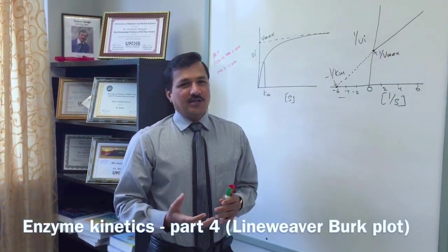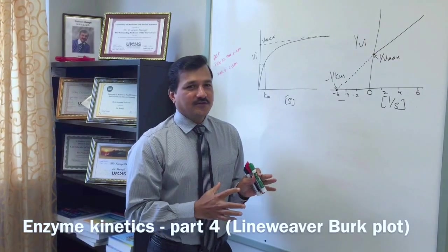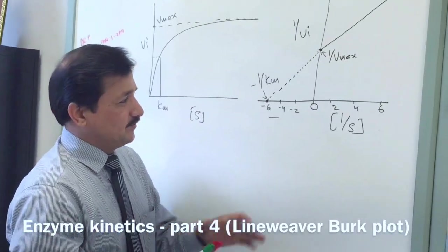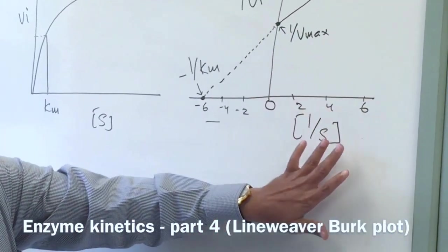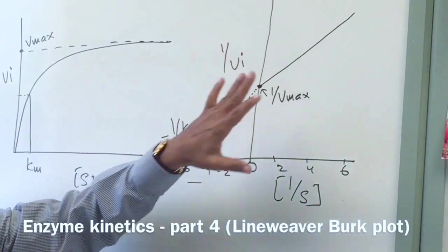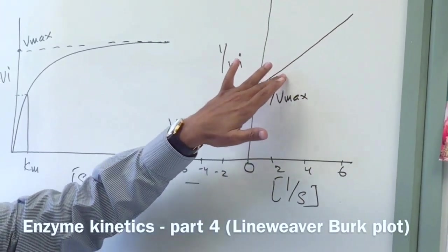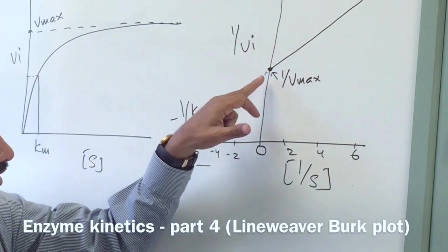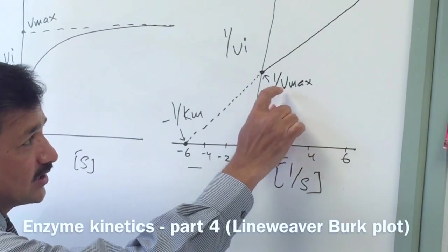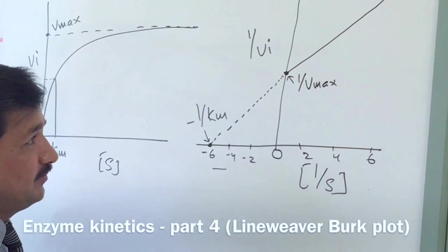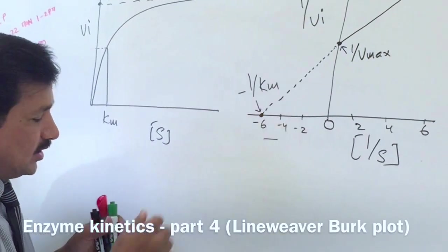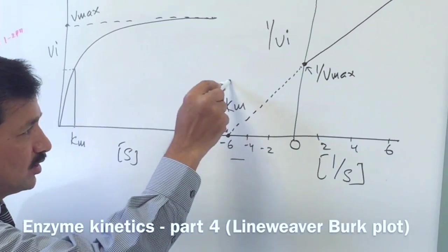Let me explain competitive and non-competitive inhibitors in relation to the Lineweaver-Burk plot. I have already drawn the Lineweaver-Burk plot here. The x-axis indicates 1 over substrate concentration, and the y-axis indicates 1 over initial velocity. Wherever the reaction velocity line touches the y-axis, that point is 1 over Vmax. If you elongate that line to meet the x-axis on the other side of 0, that point is minus 1 over Km.